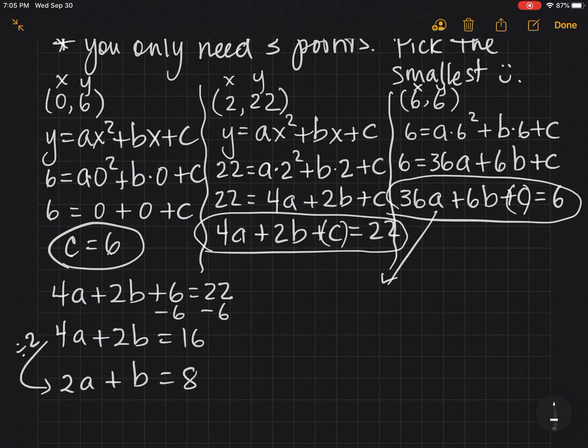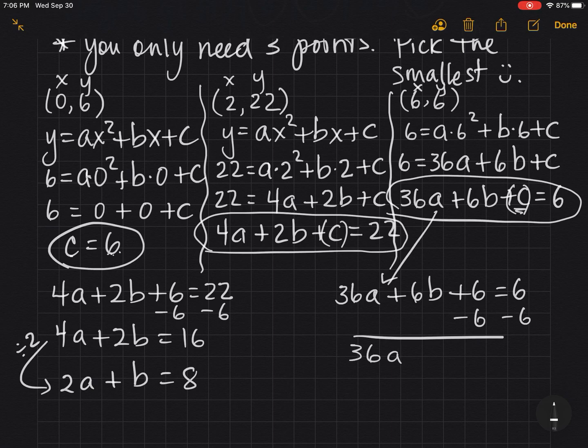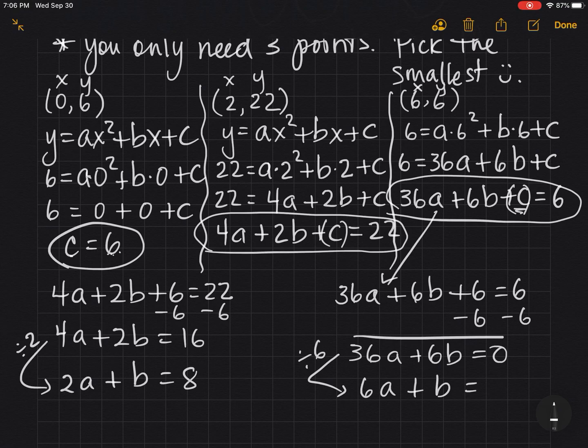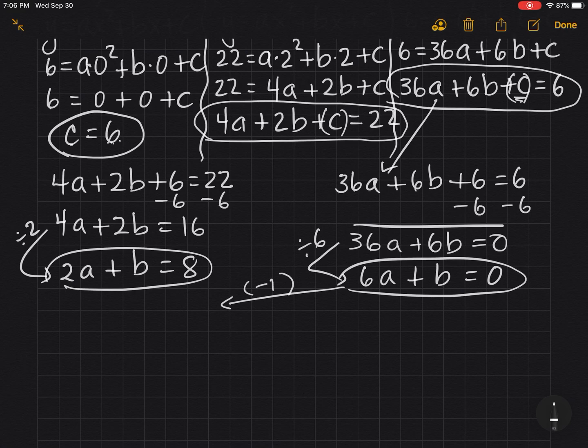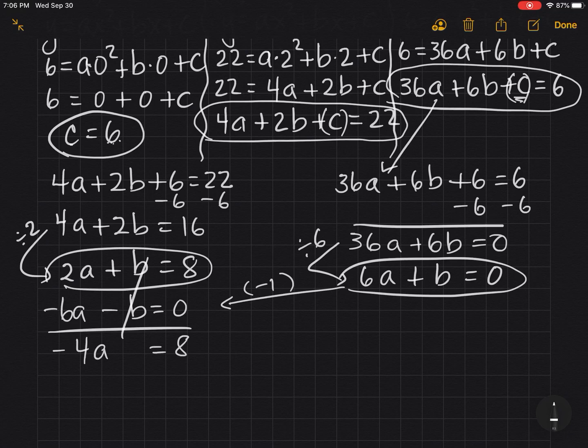I'm going to plug my c is 6 over here for the c, so I got 36a + 6b + 6 = 6. Will you look at there, that's a zero. So 36a + 6b = 0. And automatically you know I'm going to divide everything by 6 just to make the numbers smaller. Makes my life easier. So now I have a new system with only two variables and two equations. I'm going to multiply this one by -1, so I'm going to get -6a - b = 0, and I get -4a = 8.